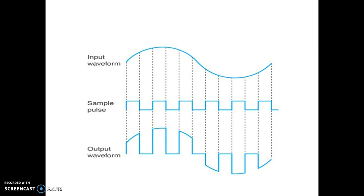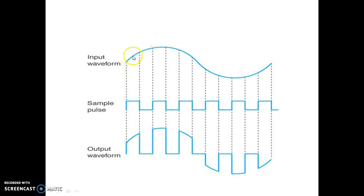Intuitively, you can understand this as if we have multiplied the carrier signal and the message signal. Whenever the carrier signal is high, the output takes the waveform shape of the message; whenever the carrier is zero, the output is also zero — because zero multiplied by anything is zero. This is called natural sampling, because the top of the carrier waveform, when high, follows the instantaneous message signal.